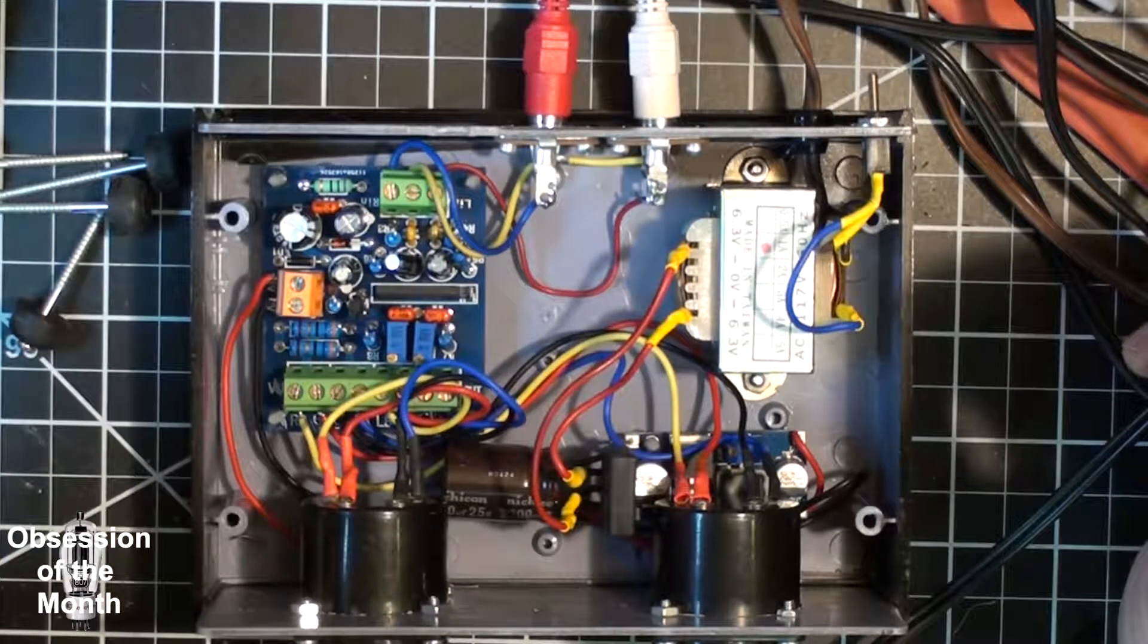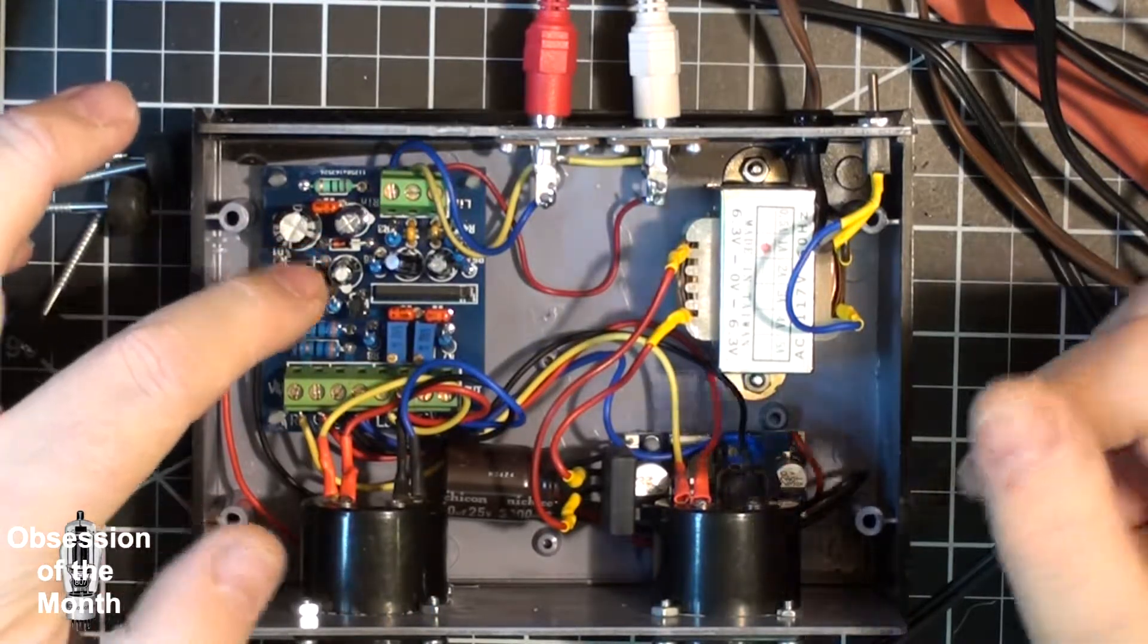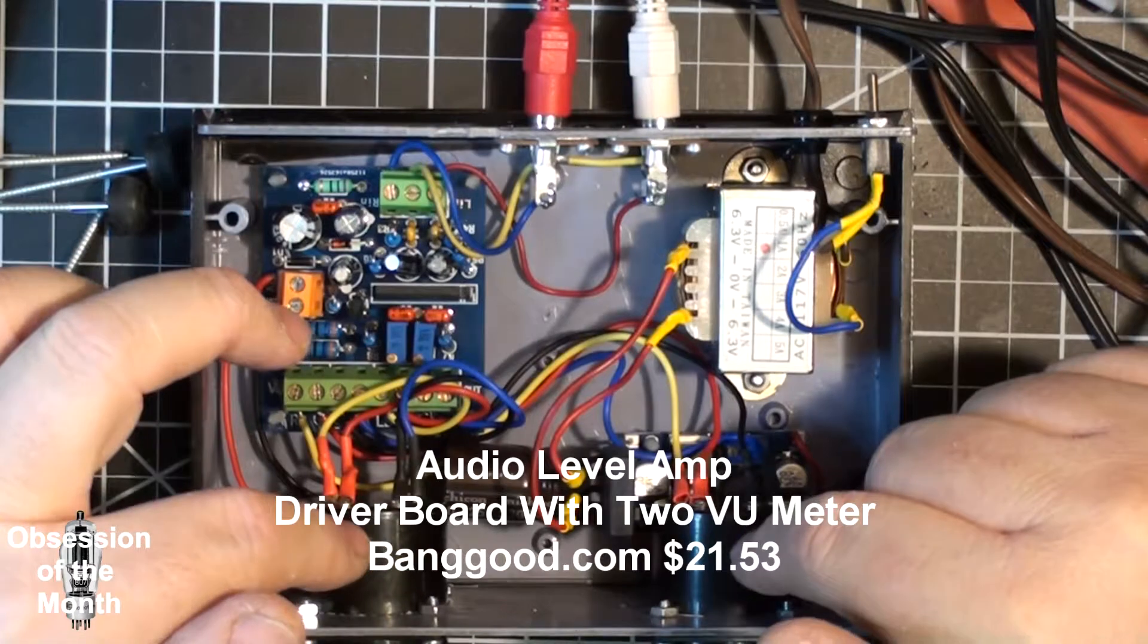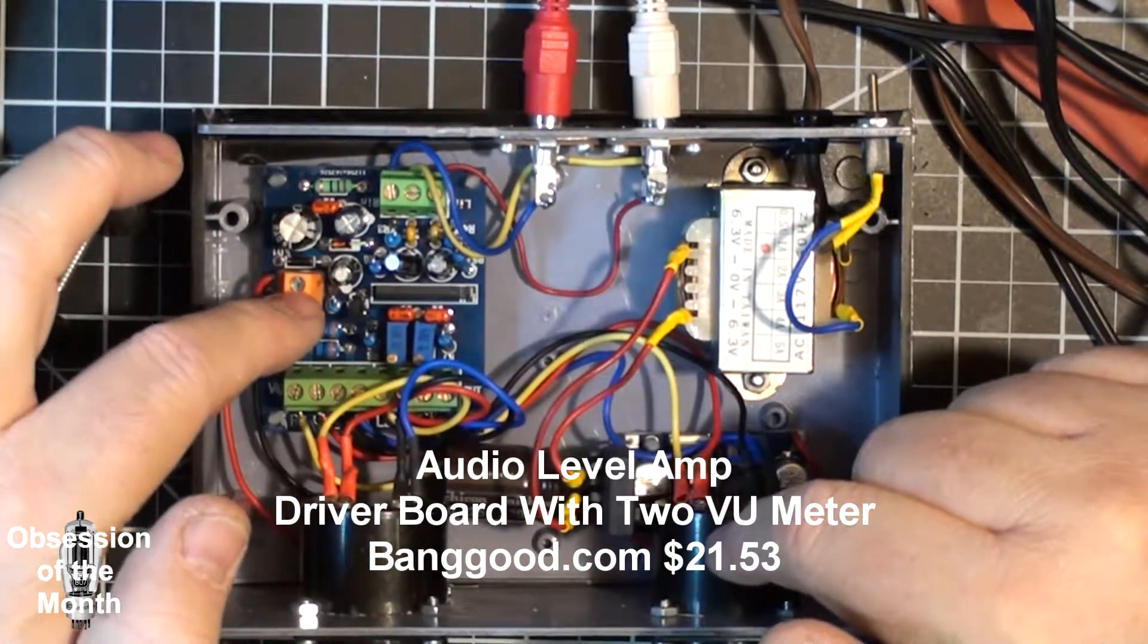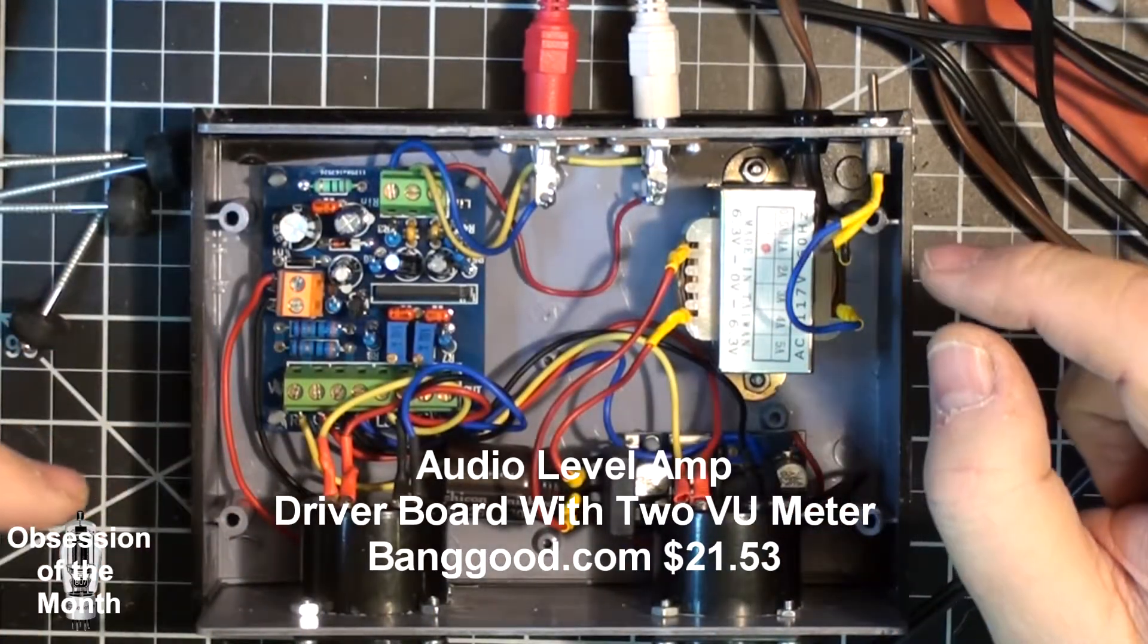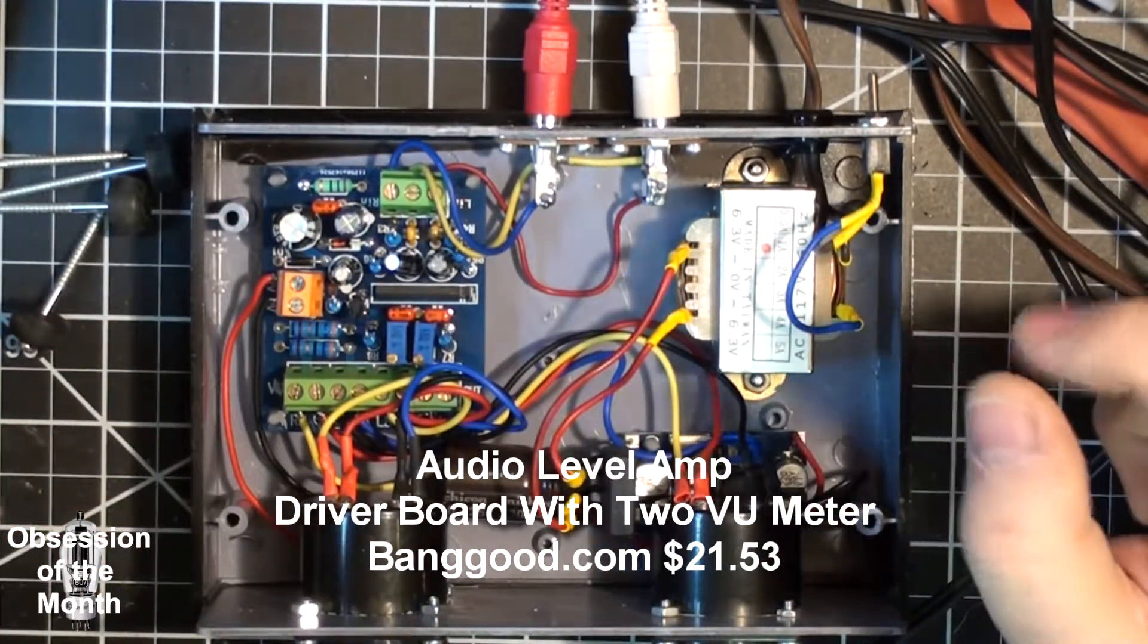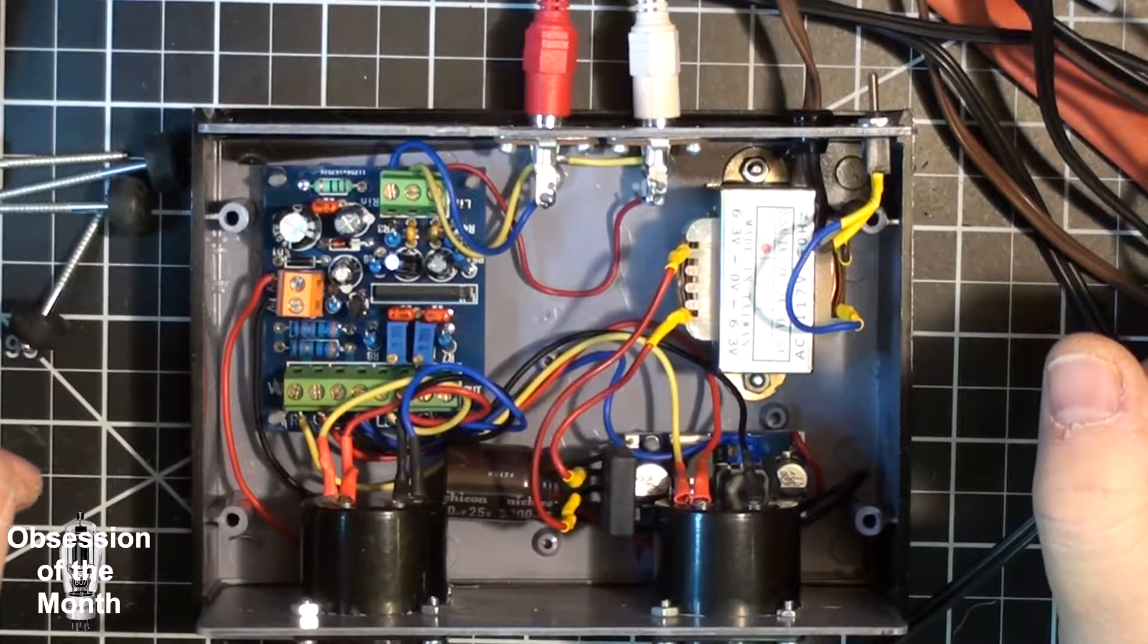The next thing is I bought the VU meter kit which consists of these two meters, this circuit board, and the wiring that you see. Came with red, blue, yeah red, black, yellow, and blue wire. You have to supply everything else.